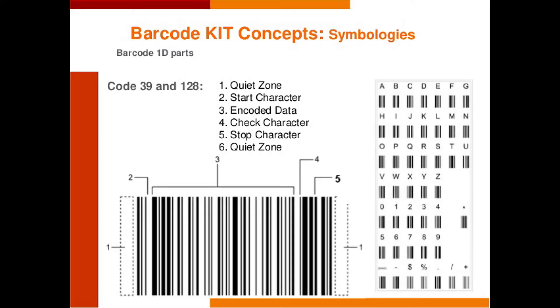1D barcodes also have their own patterns. First there is a quiet zone, then a start character, then comes the encoded data, followed by a check character and a stop character.